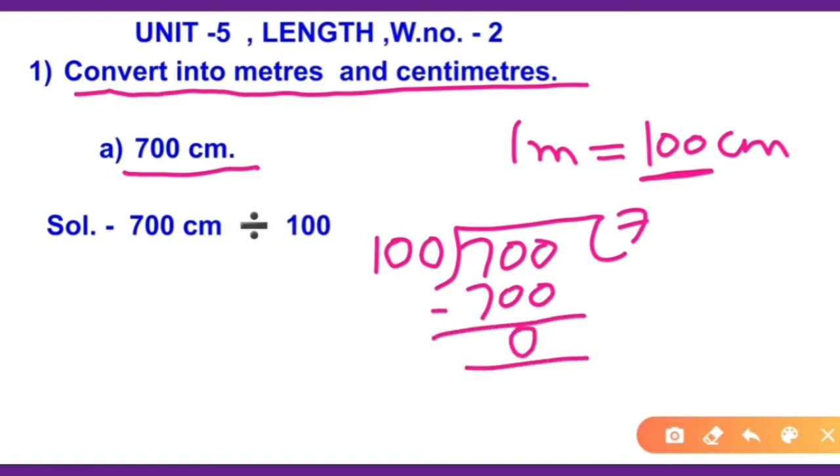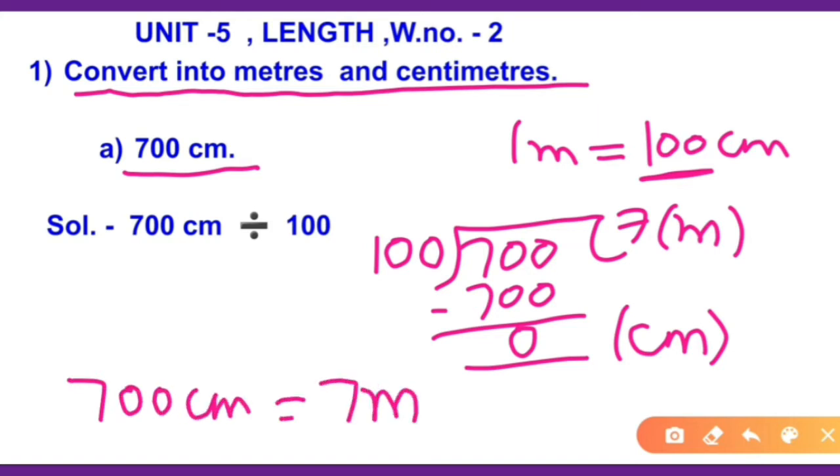100 times 7 is 700. Which is your quotient, that will be meters. And which is your remainder, that will be the centimeters. So you will write 700 centimeters equals 7 meters. And centimeters, you don't need to write, because the centimeters value is 0 here.